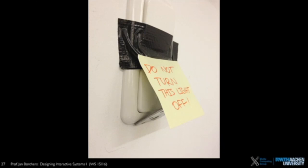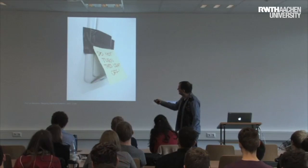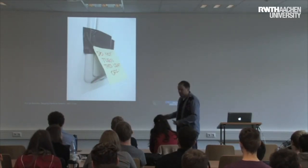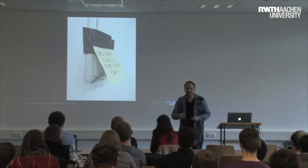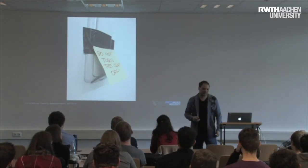Here's another example of a physical constraint: somebody put a sign saying 'do not turn this light off' — we were running an experiment and were not supposed to turn off the lights. What you can't quite see is there is a metal wedge beneath the switch which will physically keep you from turning off that light. That's a physical constraint in place.